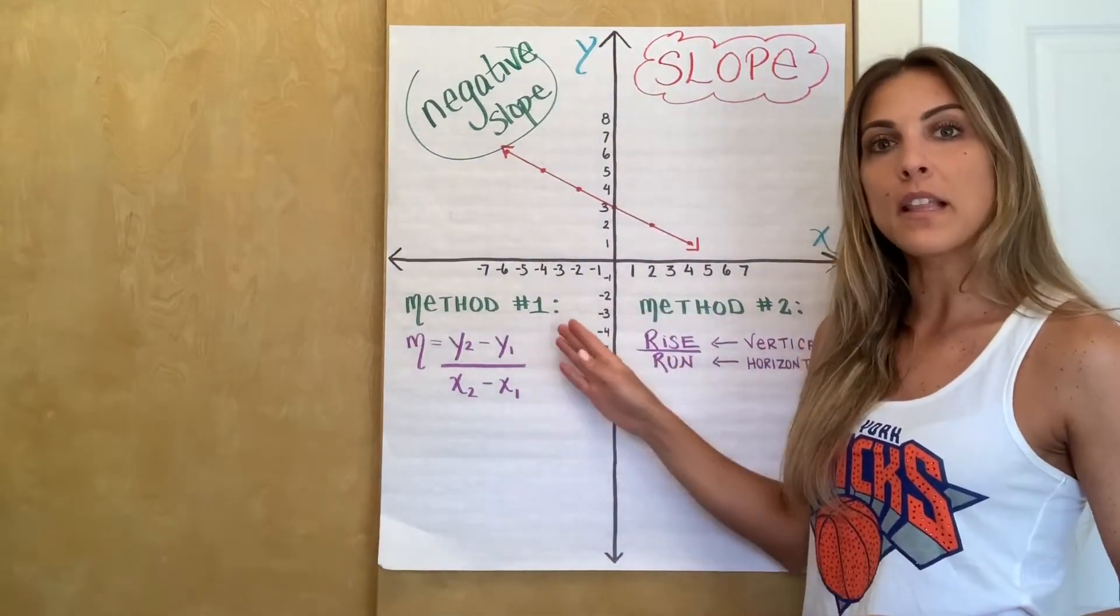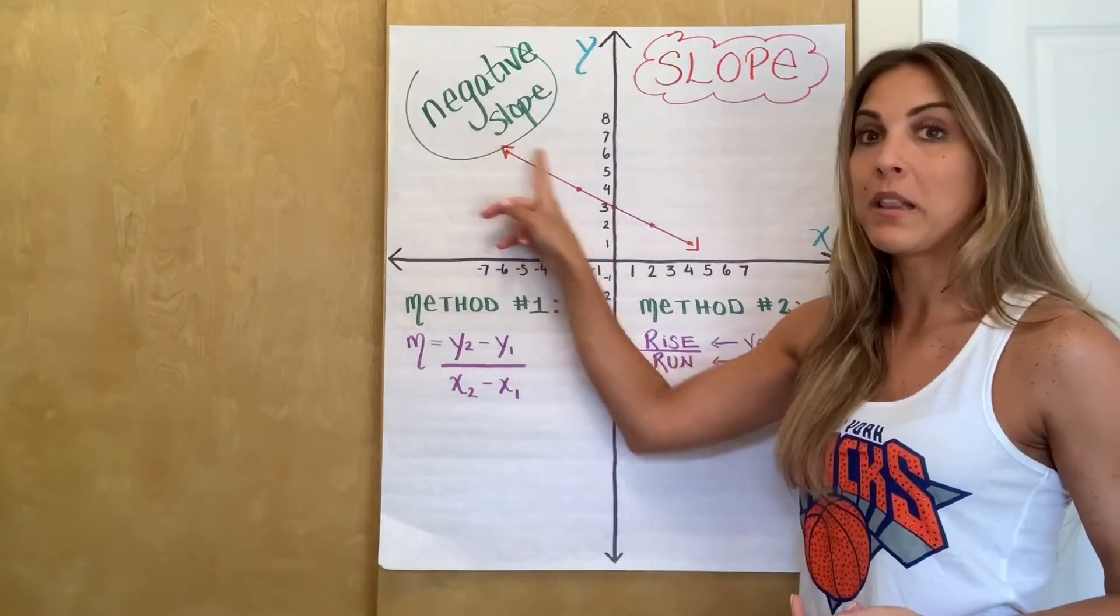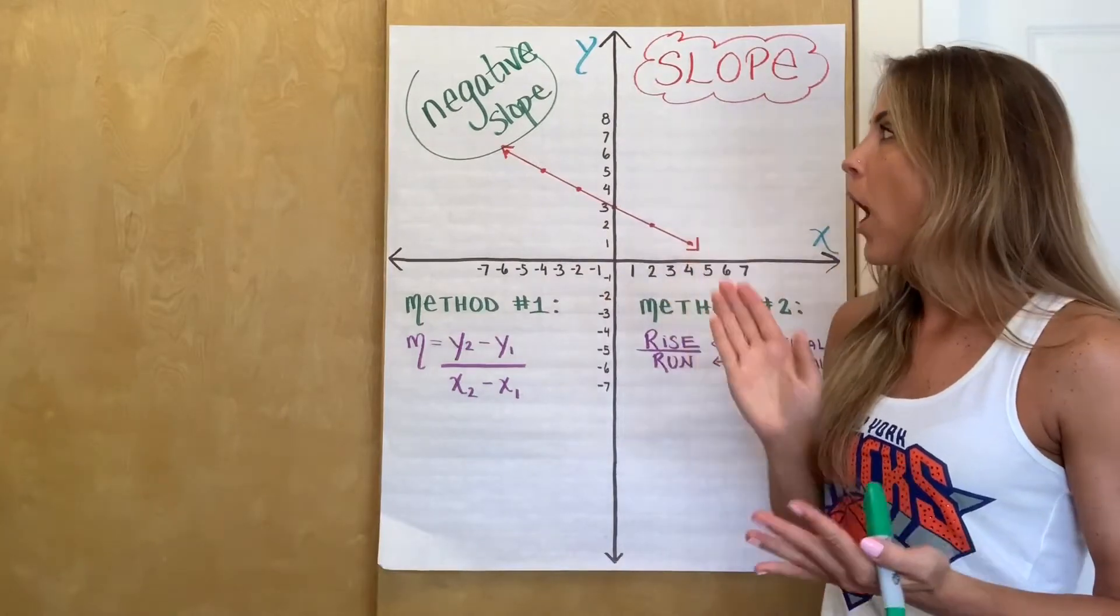And of course, on the opposite end, if it was a line that was going upwards, it would have a positive slope. And remember, you read lines from left to right. So from left to right, it's going down.